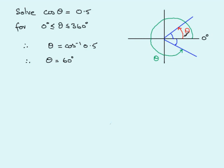60 degrees is an acute angle between 0 and 90 degrees, corresponding to the red theta — one of our solutions between 0 and 360. Looking at the diagram, the red theta is exactly the same size as the blue reference angle, so that's 60 degrees. Because the two blue angles are equal, this angle in the fourth quadrant is also 60 degrees.